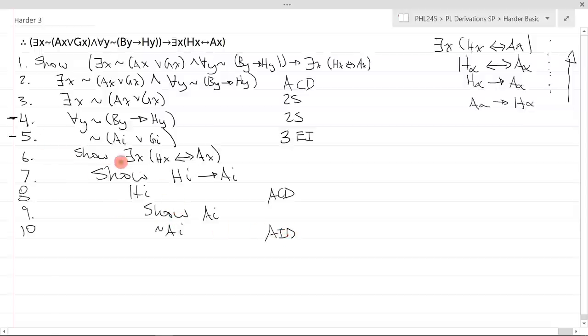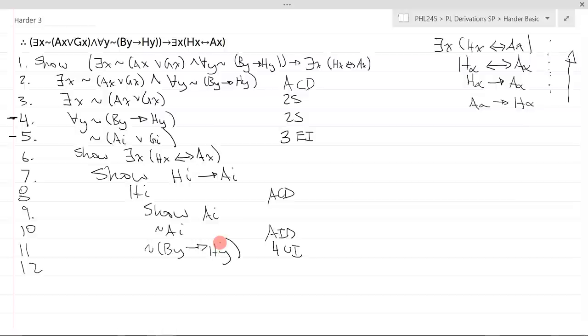Now from here, I just have to figure out what to do. Well, I have line four, which is a universal. So I can UI to anything I want. So I might as well UI to I. Why? Because I want to match this H I and this H Y together. So I'll UI and I get not bracket B I arrow H I. And that's line four UI. At this stage, it doesn't actually look like I can do much. I have H I, not AI. And I have this line here and this line here. So this is actually sort of annoying. It doesn't seem I can do much at all. And I have no premises to look at. So I just basically have to become unstuck here.